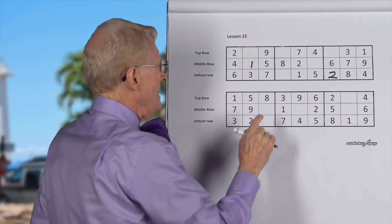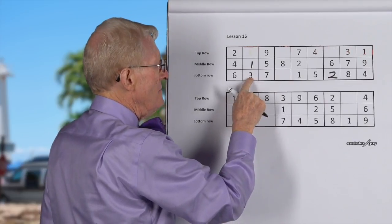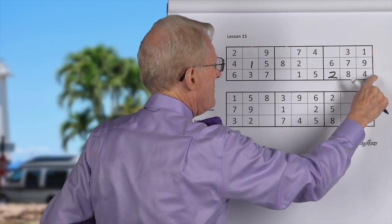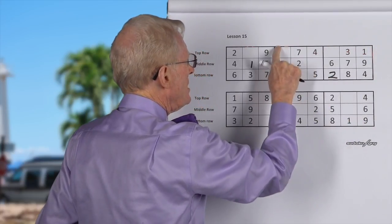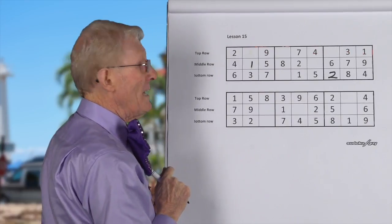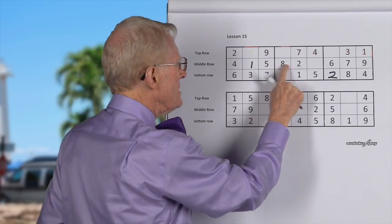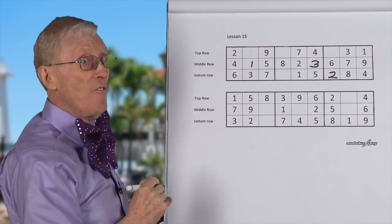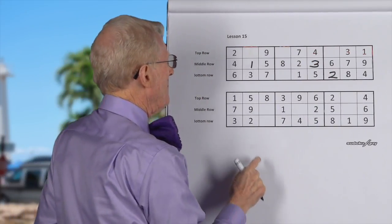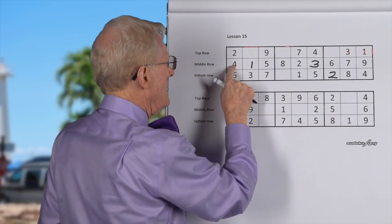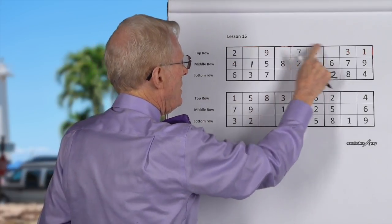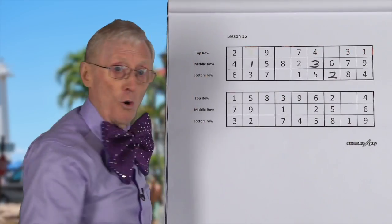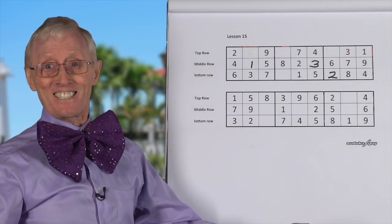Let's take the three. Here we have a three on the bottom in this block, and a three on the top of this block. Therefore, this block that doesn't have a three must have it in the middle row. So we put it there — there's no other place it can go. Let's try four now. We have a four here in the middle row, in this block it's in the top row, and in this block it's in the bottom row. It's already there — so you just forget it, it's done.